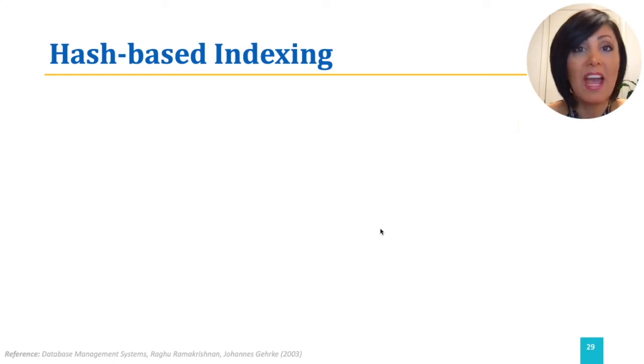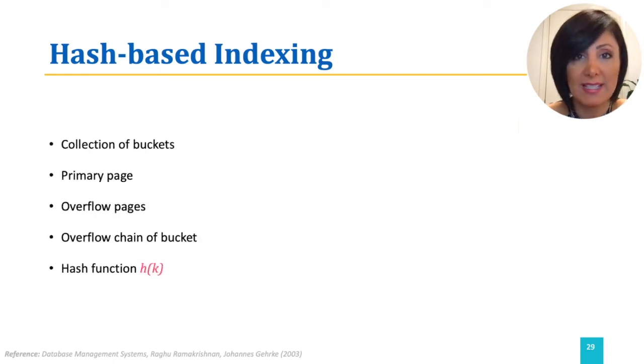In hash-based indexing, we have a collection of buckets and the hashing function. Buckets contain data entries. Data entries within a bucket can be sorted by search key value, or they could be not sorted.